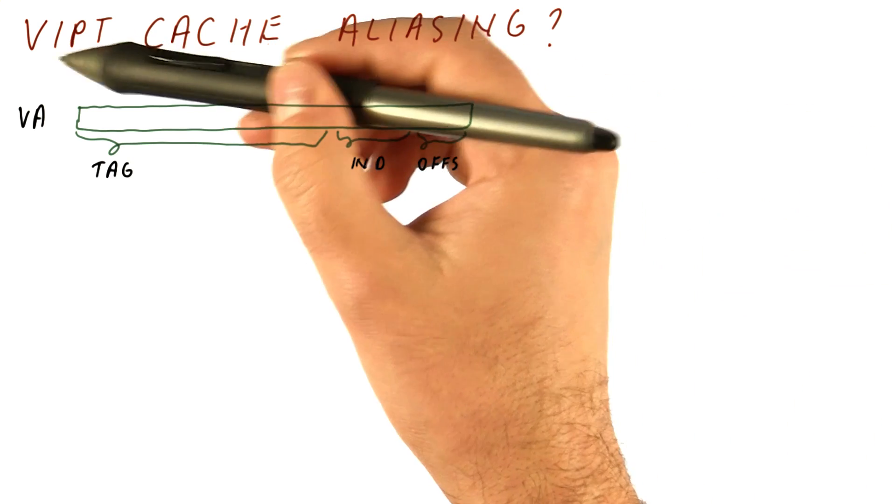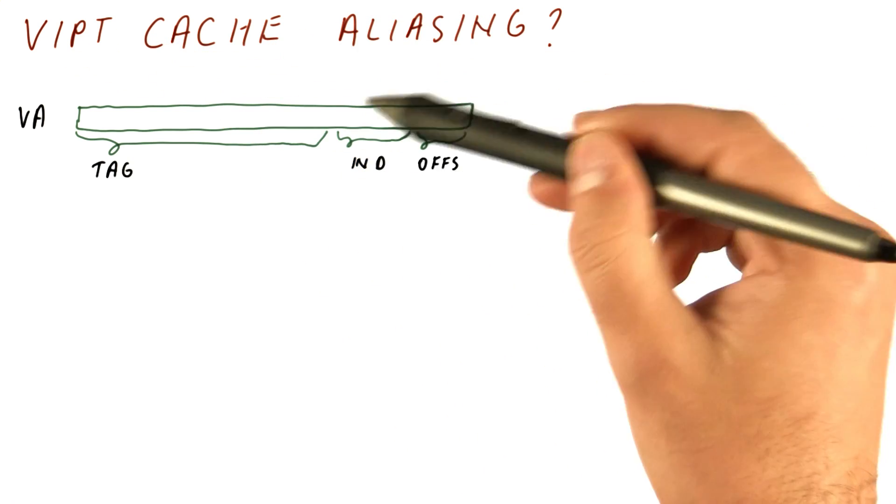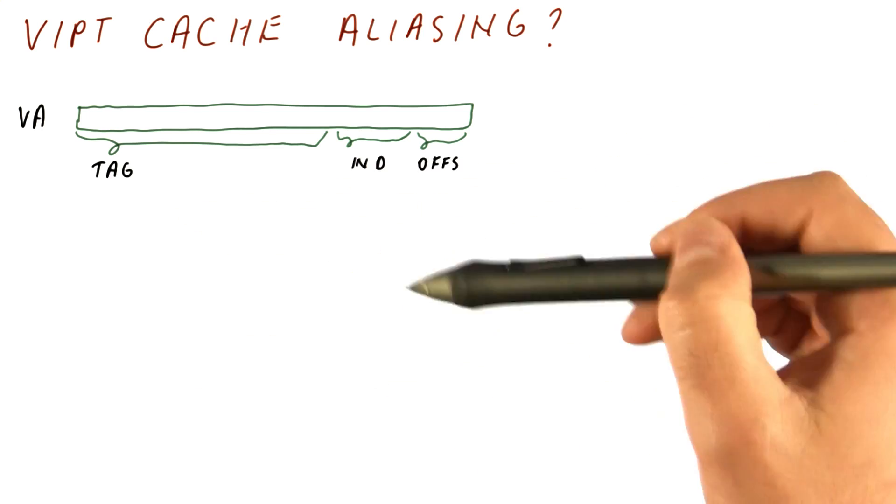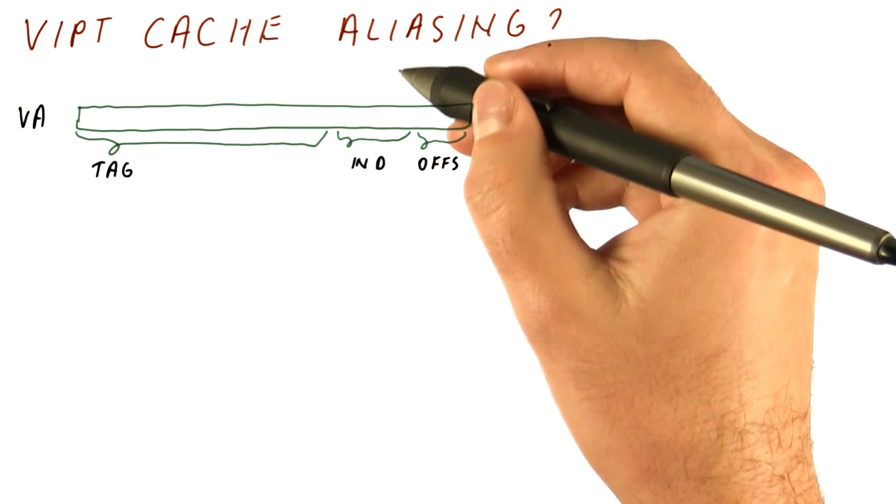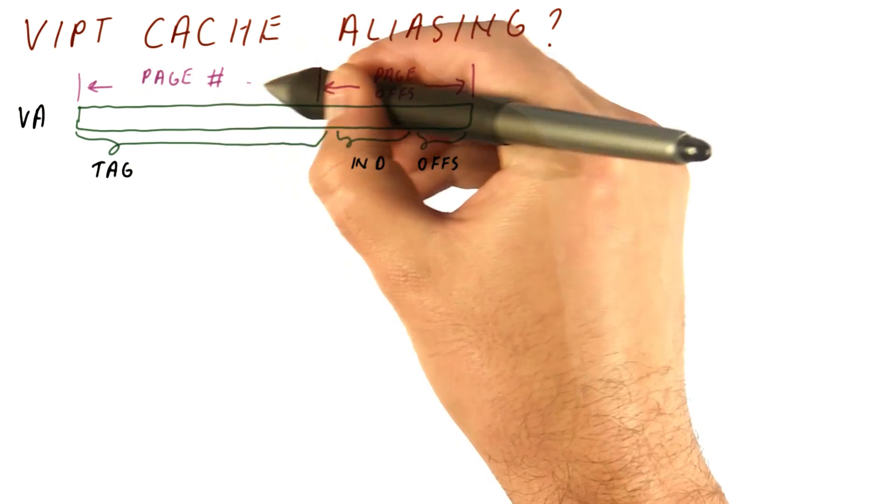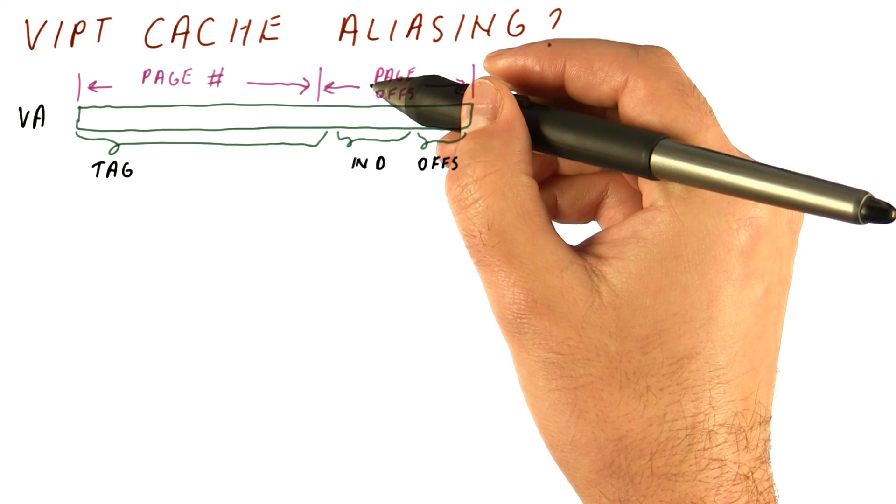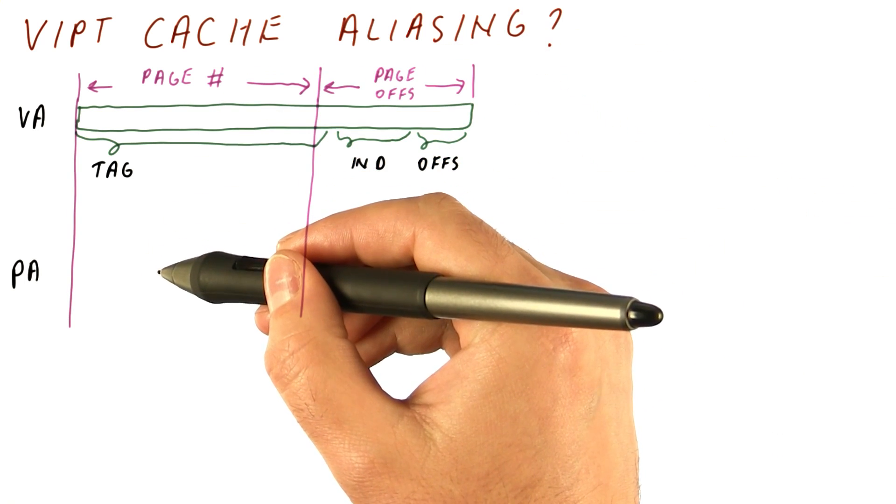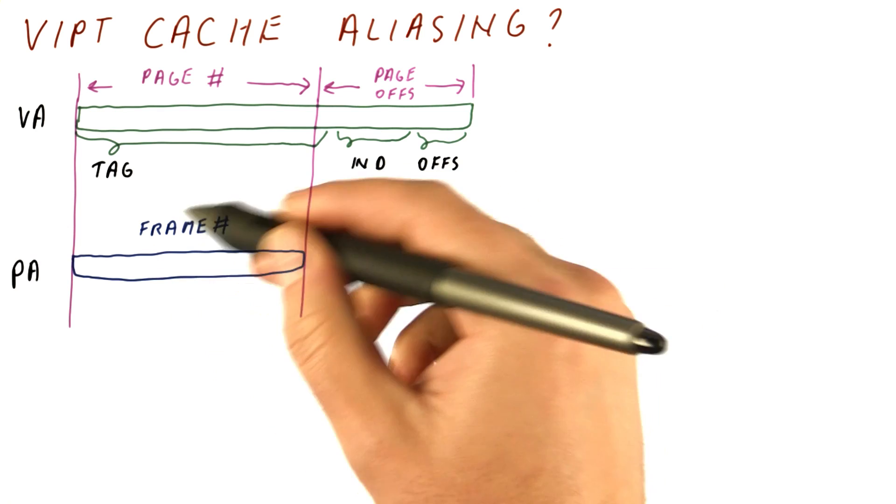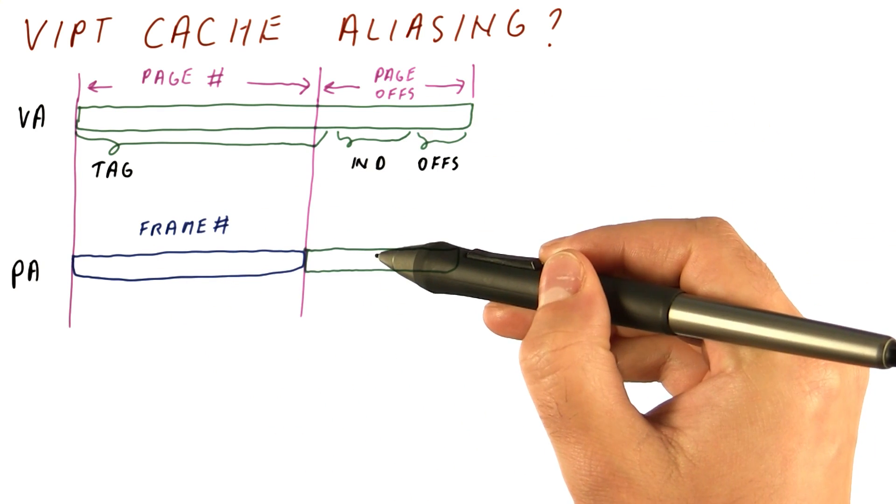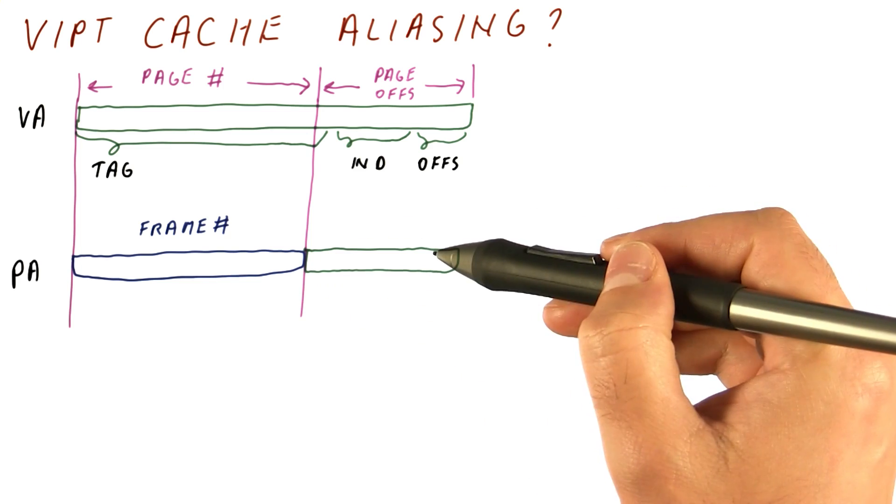In a virtually indexed cache, we use the index part of the address from the virtual address, the rest comes from the physical address. But how do we form the physical address? Some lower bits of the virtual address will be the page offset. The rest will be the page number. And now remember that the page number gets translated to become the frame number in the physical address, while the page offset just goes and becomes the least significant bits of the physical address.